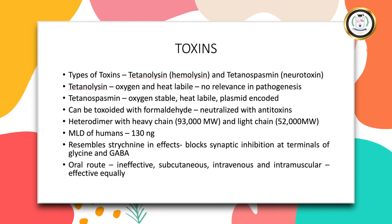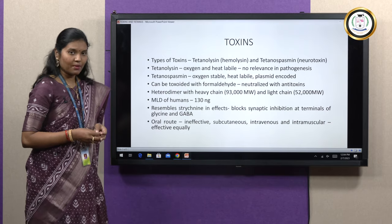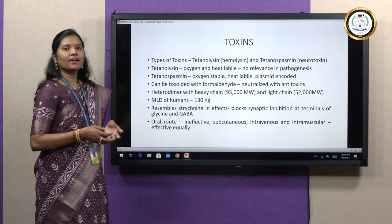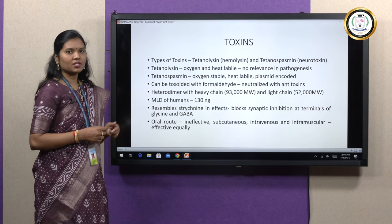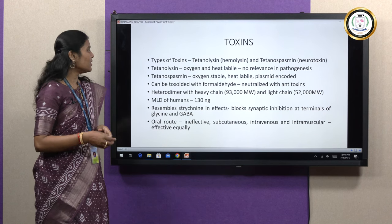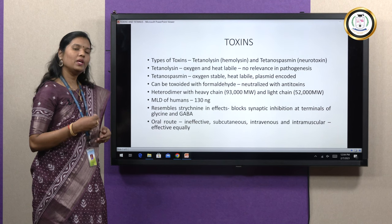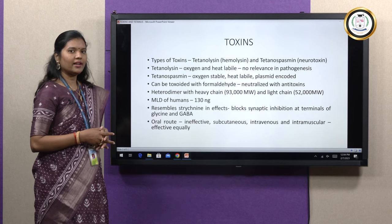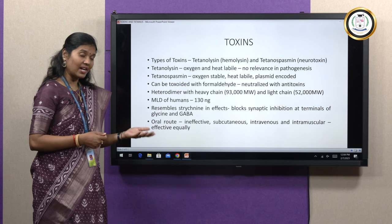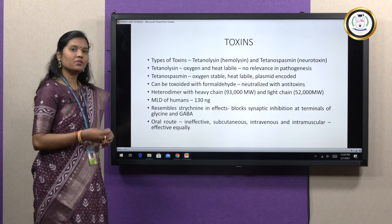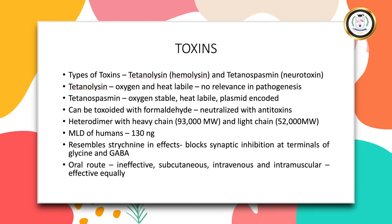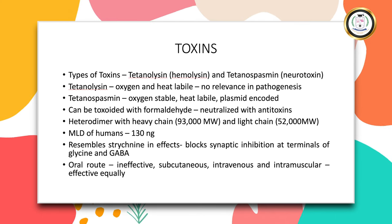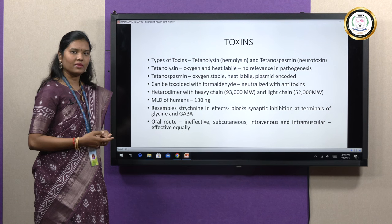Then we have tetanospasmin, the most important toxin and the causative agent of tetanus. It is oxygen stable while heat labile — it can be deactivated at just 67 degrees Celsius for 5 minutes. This toxin is plasmid encoded. It can be toxoided on combination with formaldehyde and it is a potent antigen, so it can be neutralized with antitoxins. This is an exotoxin, and on release from the bacilli, the toxin undergoes autolysis to form a heterodimer.